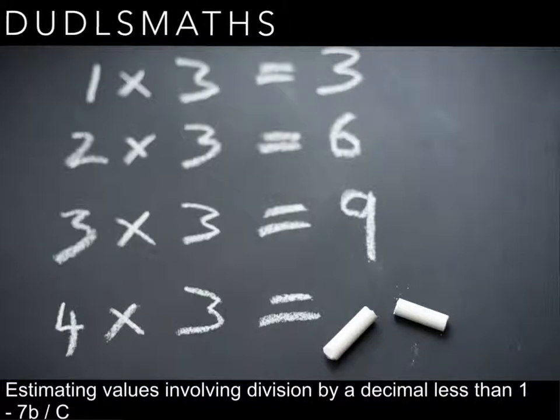Okay, in this video we're going to have a look at estimating values when there's a division by a decimal which is less than 1. So things like dividing by 0.5 or dividing by 0.2, things like that.